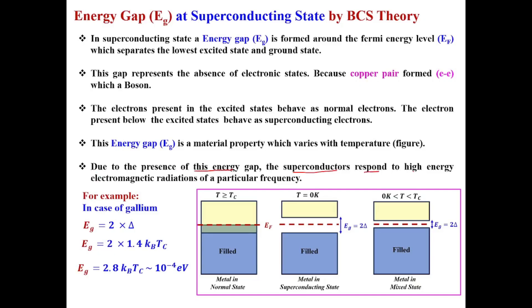For example, consider gallium, whose Eg is around 10⁻⁴ electron volts. Likewise, for other superconductors the energy gap varies, and accordingly that superconductor will respond to a particular frequency. So this is all about the energy gap at the superconducting state as explained by BCS theory, which is based upon electron-lattice-electron interaction.